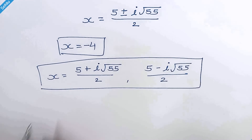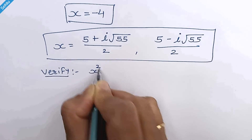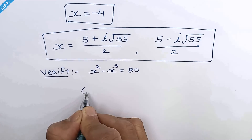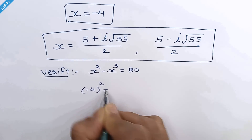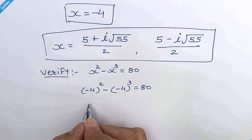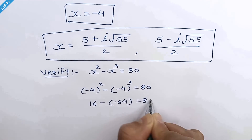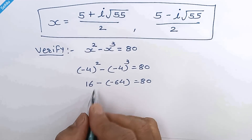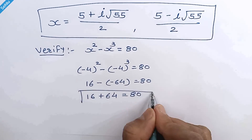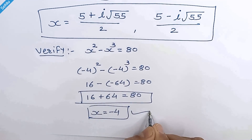Now let's verify the real value of x. Our given question is x squared minus x cubed is equal to 80. Substituting x equals negative 4: negative 4 squared minus negative 4 cubed equals 16 minus negative 64, which equals 16 plus 64, which equals 80. So x is equal to negative 4 is confirmed as our answer.